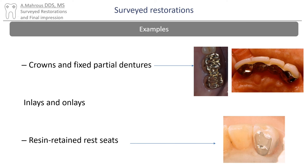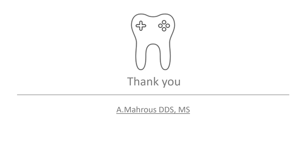Surveyed restorations can be in the form of crowns, fixed partial dentures, inlays, onlays, or even resin bonded veneers. That's it for this video, we hope it was helpful, and we'll see you guys on the next one.